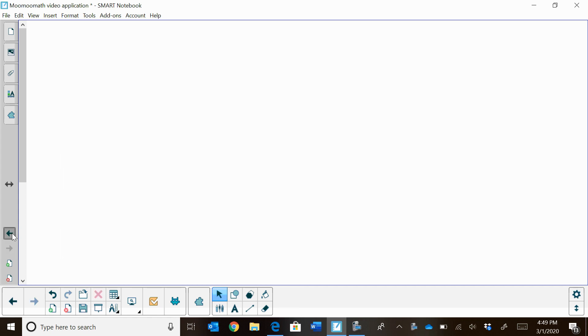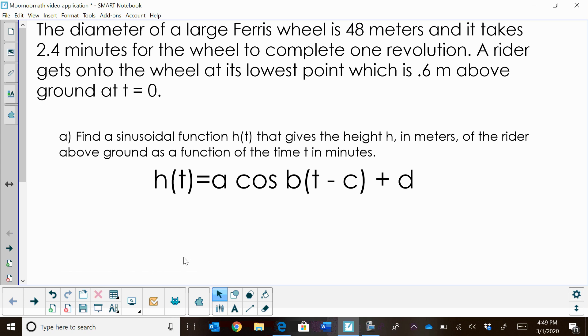Here's our Ferris wheel problem. The diameter of a large Ferris wheel is 48 meters, and it takes 2.4 minutes for the wheel to complete one revolution. The rider gets onto the wheel at its lowest point, which is 0.6 meters above the ground, at time zero.